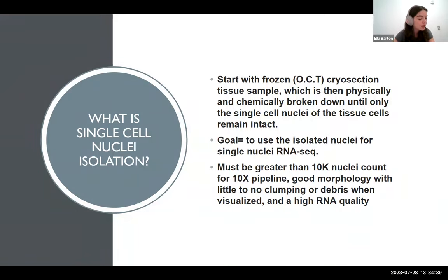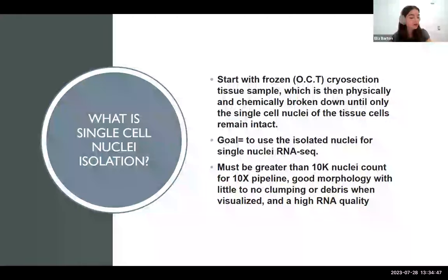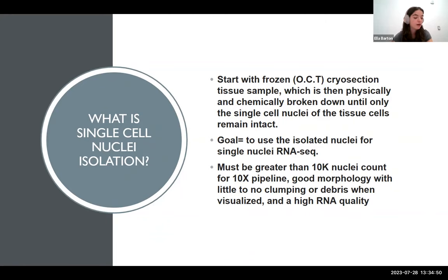In order for a sample to be viable, there must be a high nuclei count, little to no clumping or debris when visualized, as well as a high RNA integrity number and DV200, which evaluates the percentage of RNA fragments that are larger than 200 nucleotides.